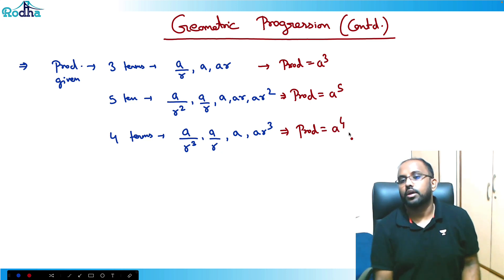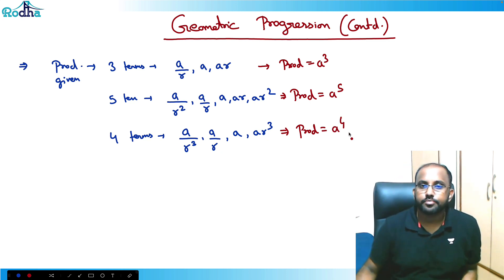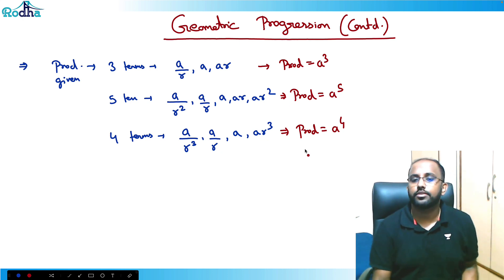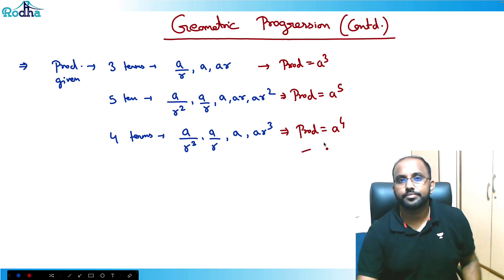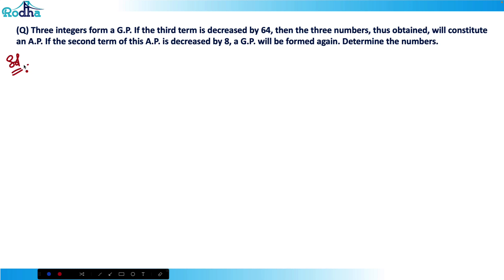Now let's practice some questions. The first question says: three integers form a GP. If the third term is decreased by 64, the three numbers constitute an AP. If the second term of this AP is decreased by 8, a GP is formed again. Determine the numbers. Since no product is given, I'll treat it as a general GP and take the three terms as a, ar, and ar².